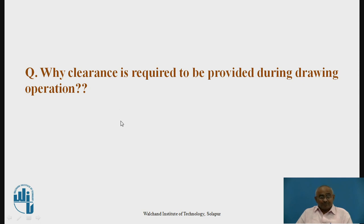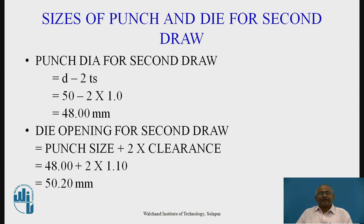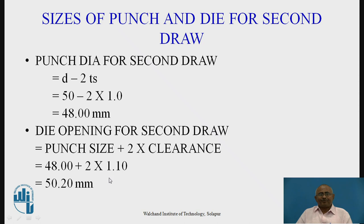I will pose a question before you before moving forward: why is clearance required to be provided during a drawing operation? Think over it. Now, we have to decide the sizes of the punch and die for the second draw. Punch diameter for the second draw = diameter of cup − 2 × sheet thickness = 50 − 2 × 1 = 48.0 mm. Die opening for the second draw = punch size + 2 × clearance = 48 + 2 × 1.10 = 50.20 mm.